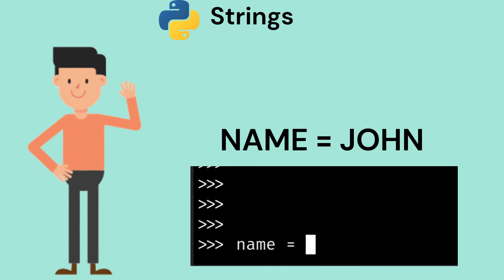For strings, let's say we want to store someone's name. We can do this by creating variables of data type string, for example, name equals John.